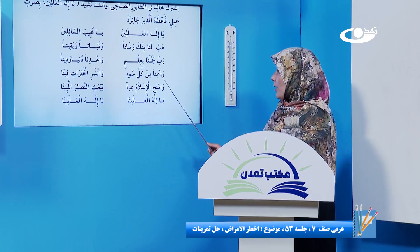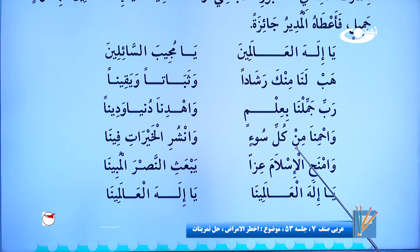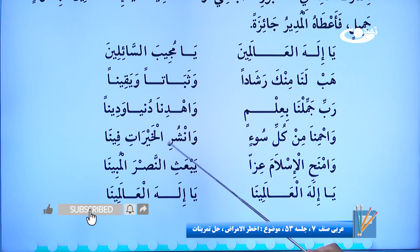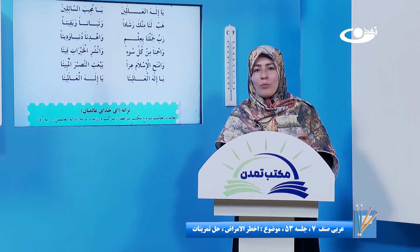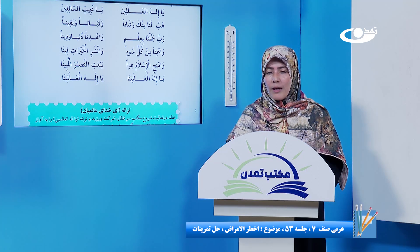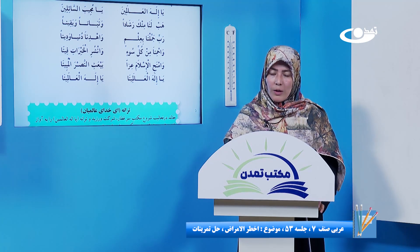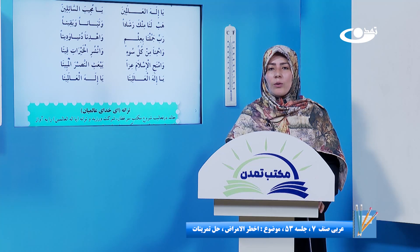و آرامش و یقین و باور. «وهِمنا» به معنای نگهدار ما را، «من کل سوء» از هر بدی، «ونشر الخیرات فینا» ناشر کن خوبی‌ها را در بین ما. «وآتِ الإسلام عزةً» اتا کن به اسلام عزت، «ونصراً مبیناً» و برانگیخته کن یاری آشکار را در بین ما. «یا إله العالمین». کوشش کنیم این شعر را بارها بخوانیم تا حفظ شویم. محتوای خیلی زیبایی دارد و تمناهای خداپسندانه‌ای دارد. ما هم برای شما بهترین‌ها را آرزو می‌کنیم تا دیدار بعدی، خدا یار و نگهدار شما.